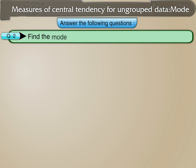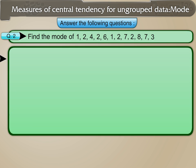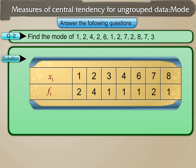Find the mode of 1, 2, 4, 2, 6, 1, 2, 7, 2, 8, 7, and 3. We will first make a frequency table. Here, the observation 2 has the maximum frequency of 4. Therefore, mode is 2.